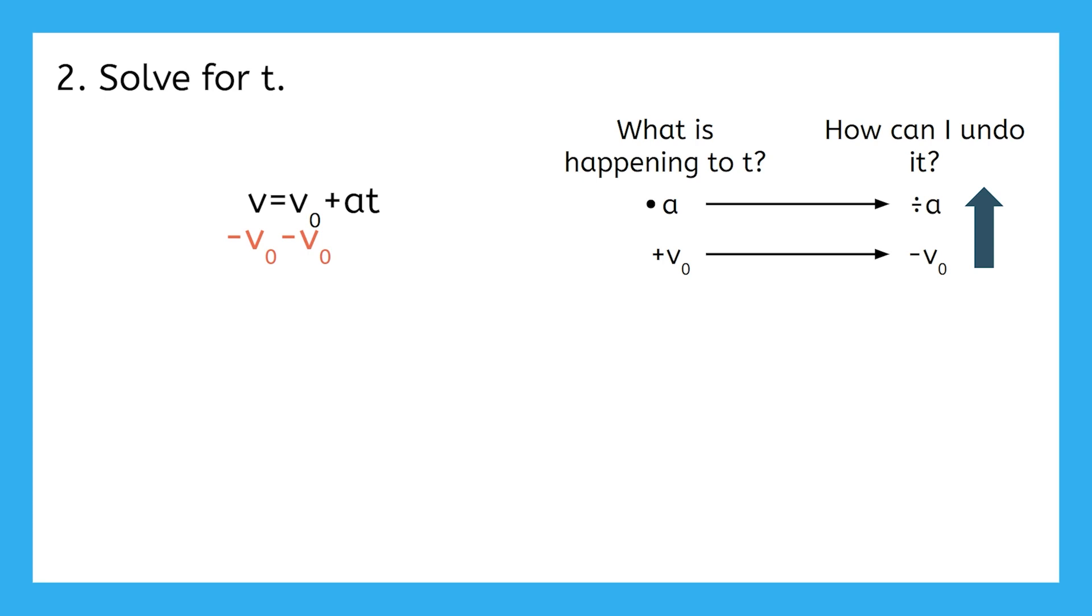On the right, V0 minus V0 cancels, leaving AT. On the left, what's V minus V0? Remember, these are not like terms, so we can't combine them.